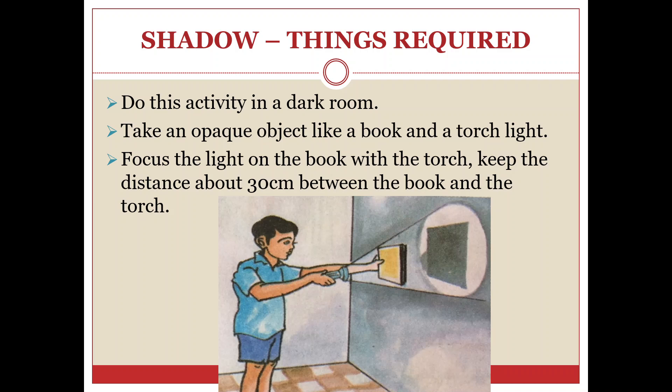We need a source of light and an opaque object to get a shadow. But are a source of light and an opaque object enough to get shadows? Do we need something more? Let us understand it through these experiments.